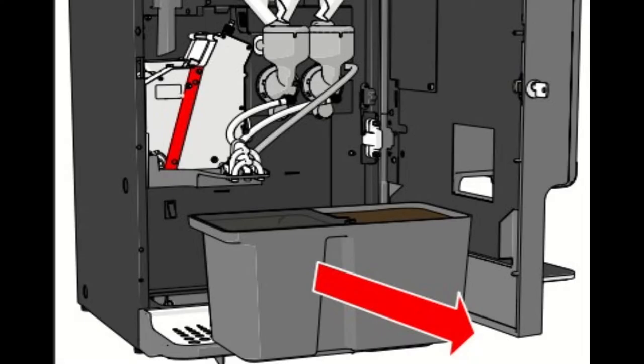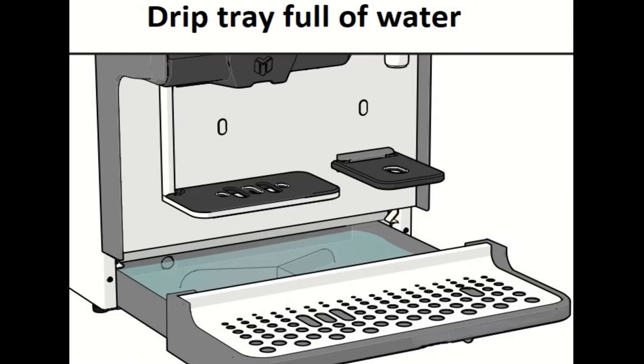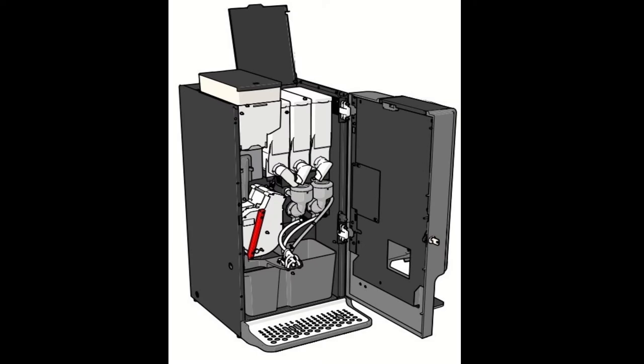If we don't perform daily cleaning, we will encounter some errors and the machine will not dispense drinks. A good example is when the drip tray can be cleaned by opening the door of the machine to activate the rinse menu.